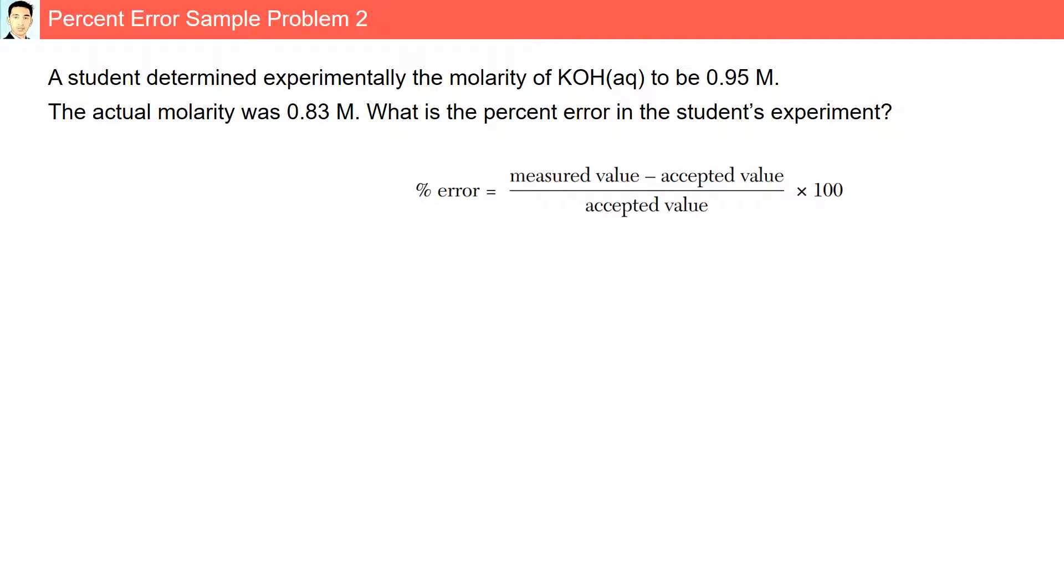Percent error sample problem 2. A student determined experimentally the molarity of KOH, potassium hydroxide, to be 0.95 molar. The actual molarity was 0.83 molar. What is the percent error in the student's experiment?